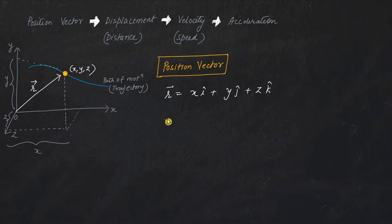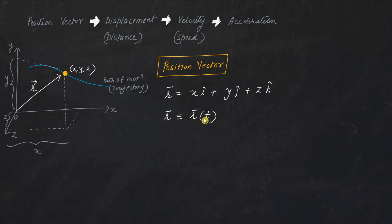Of course, r here is not just any fixed number — it is dependent on time, because the particle is moving along some particular path. So r is a function of time, and once I define the position vector in this manner, I can go on to define other physical quantities.